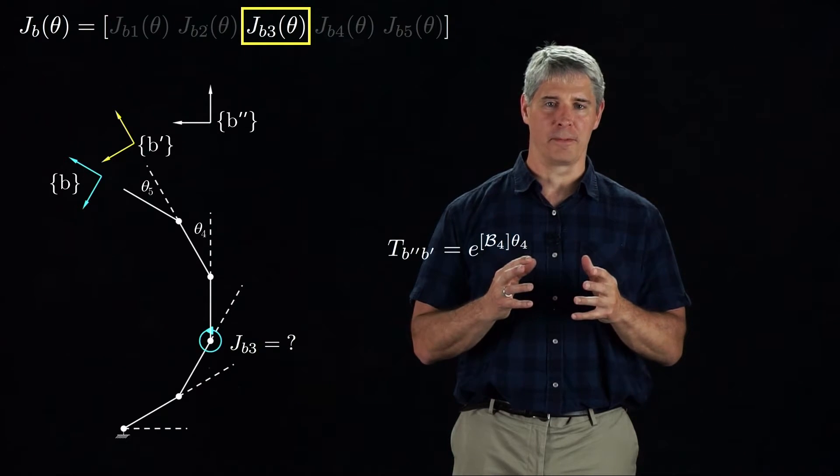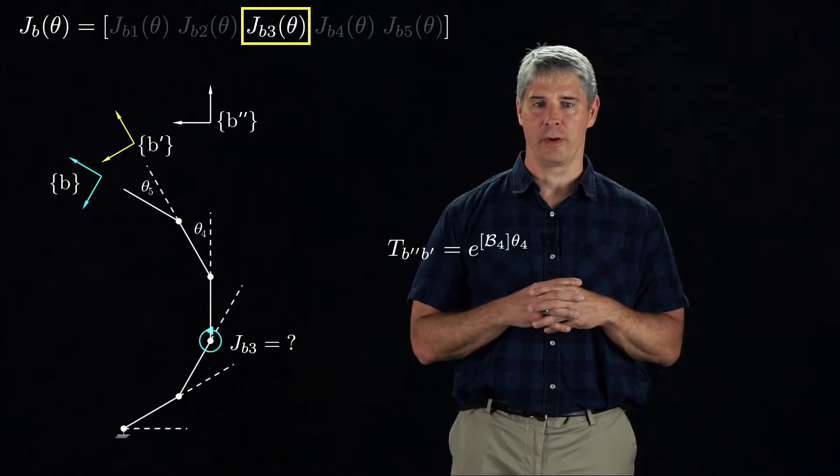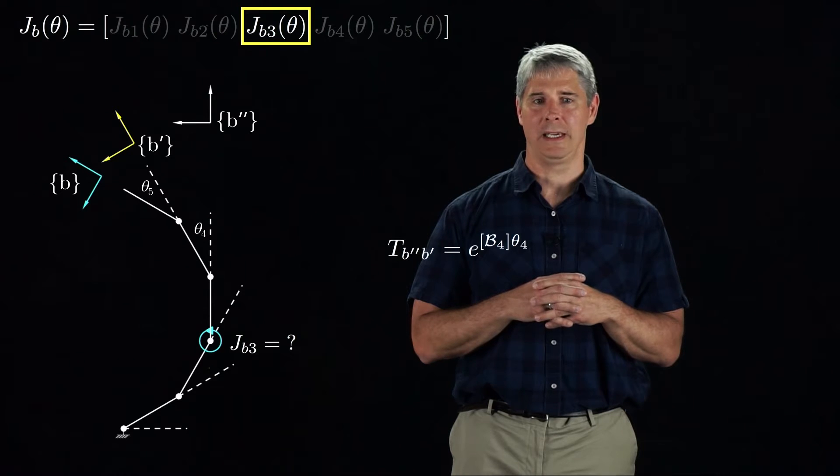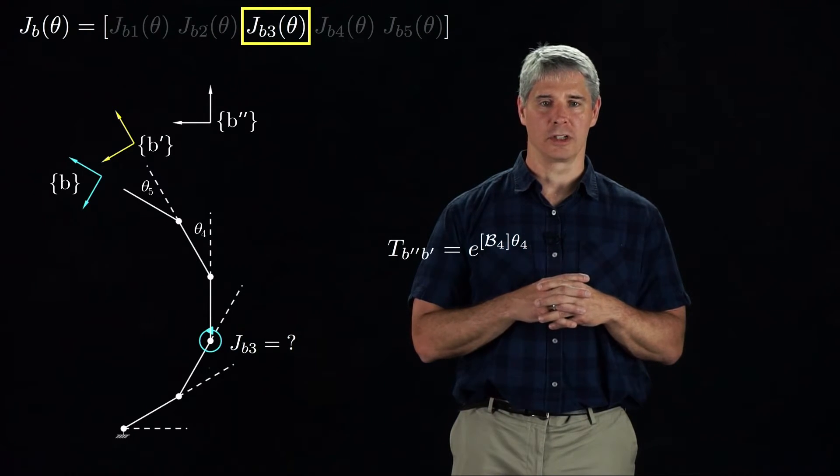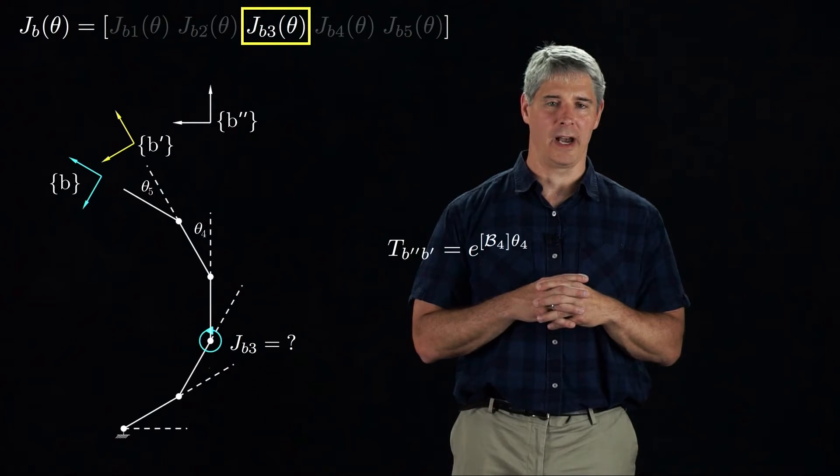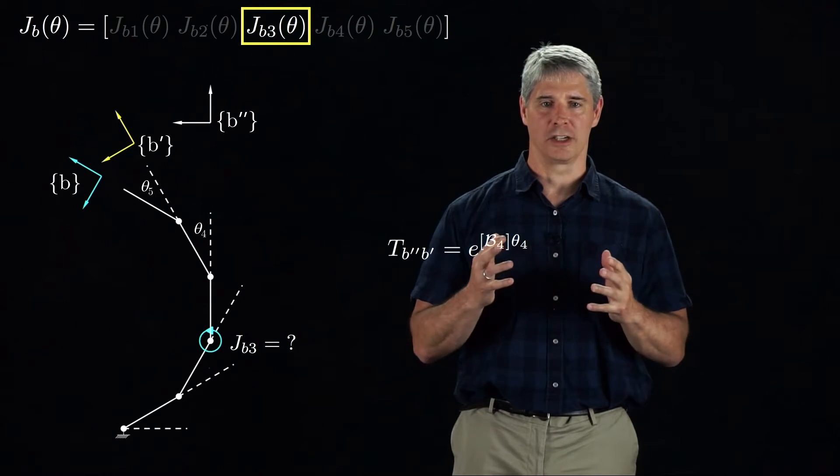To find the B frame relative to the B'' frame, we post-multiply Tb'B'' by the body frame transformation corresponding to rotation about the body screw axis B5, giving us the equation shown here.